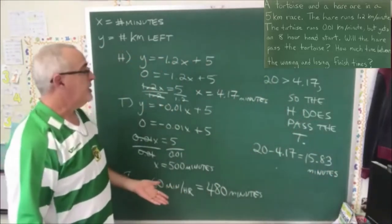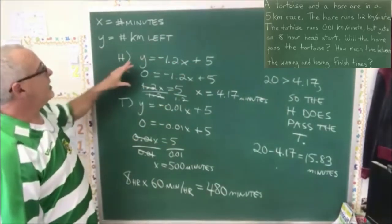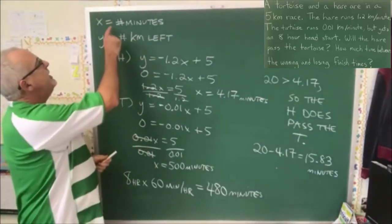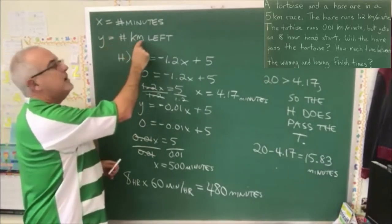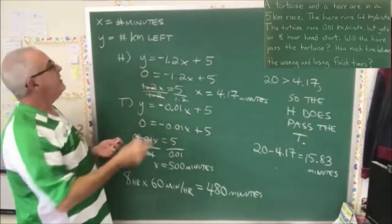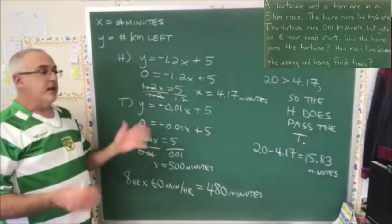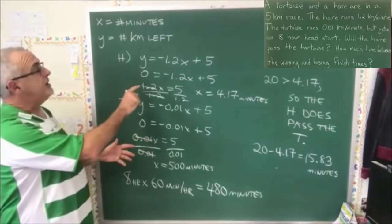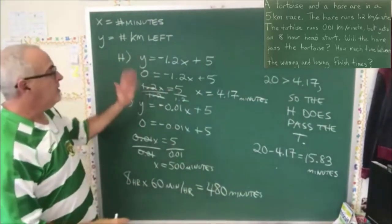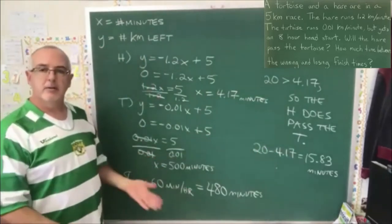We've answered the second part of the question. This question was answered using equations with a negative slope, and that happened because of the way we defined the variables — y as the number of kilometers left. If we want to do this with a positive slope, we define y as the number of kilometers covered. That means a student could do this question with negative slopes and get the correct answer, and another student could do it with positive slopes and also get the right answer. They both could get full marks.